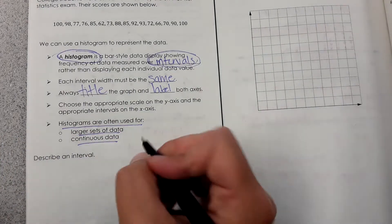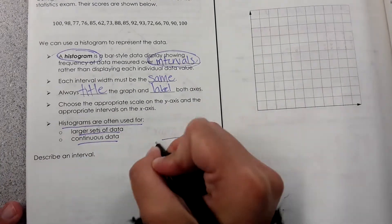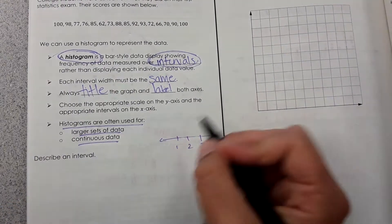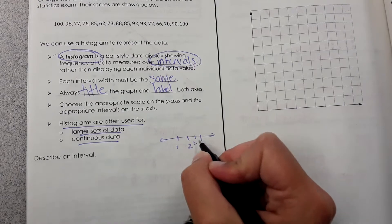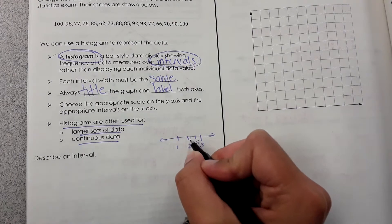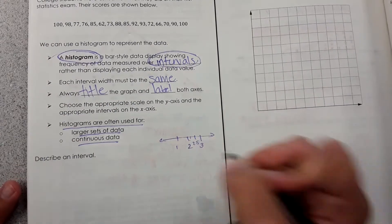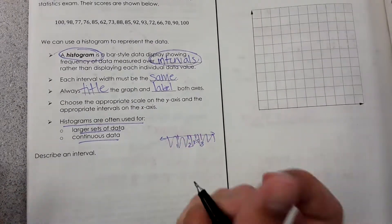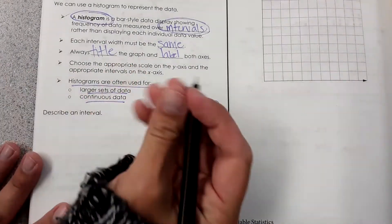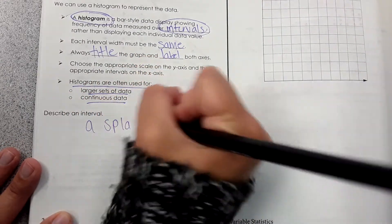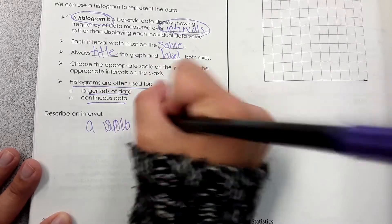So yesterday with the line plot, you would have to write the whole numbers on the line, but what if you had a 2.5 or 2.25? You can't really graph that on a line plot, so you would use a histogram. Describe an interval. It's a span. Whoa, I can't spell. Span of numbers.